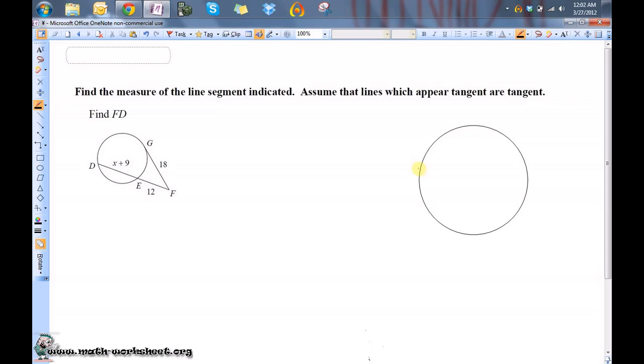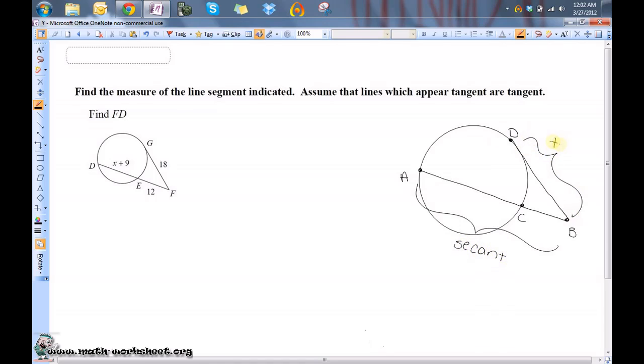Let's say we have a circle with the following secant line and the following tangent line. Let's call this AB, call that point C and this D. This is the secant and this is the tangent and they intersect outside of the circle.